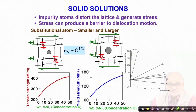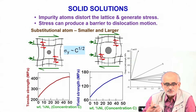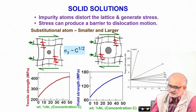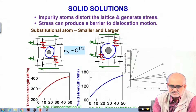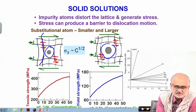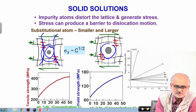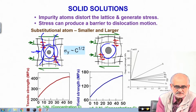The first mechanism is solid solution strengthening. Just as sugar or salt dissolves in water up to a certain extent and changes its properties, in metallic crystalline systems, if you pack in atoms that are smaller in size, the lattice planes tend to collapse and move towards the smaller atom, creating a stress field around that region. This stress field is tensile in nature because the atoms are dilated.